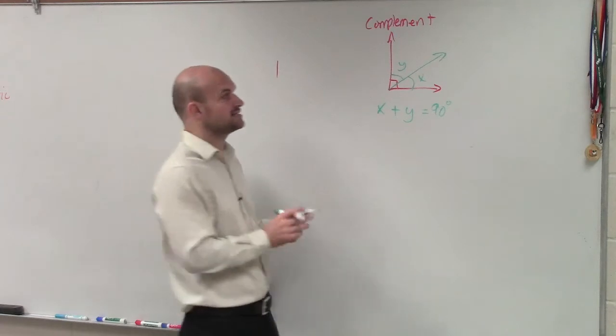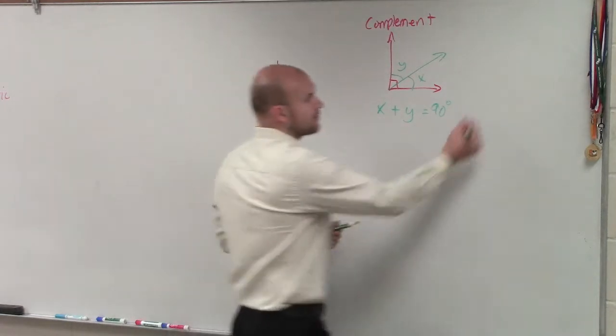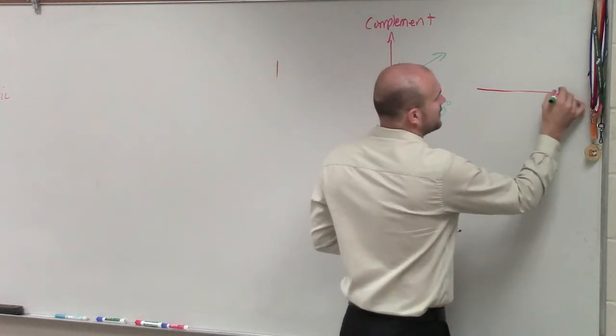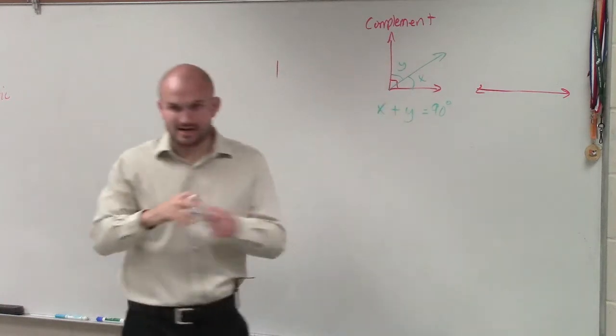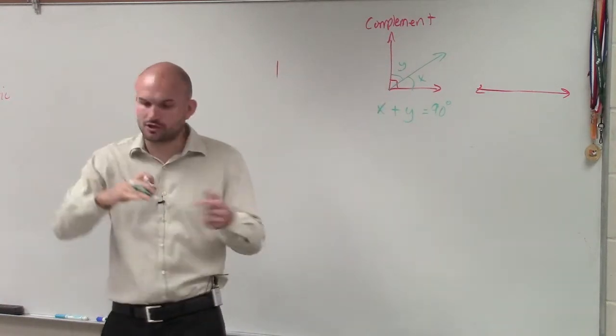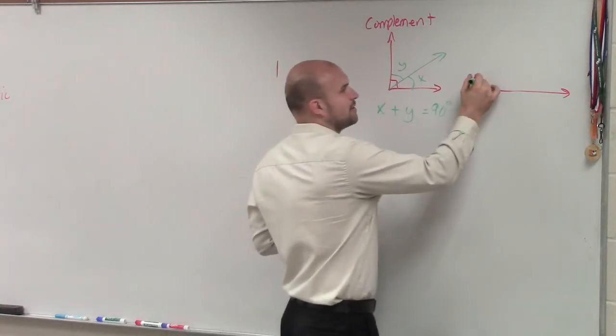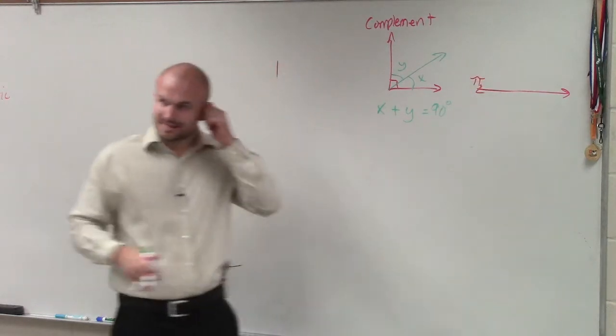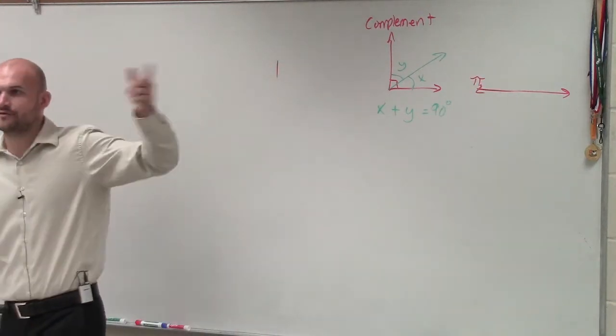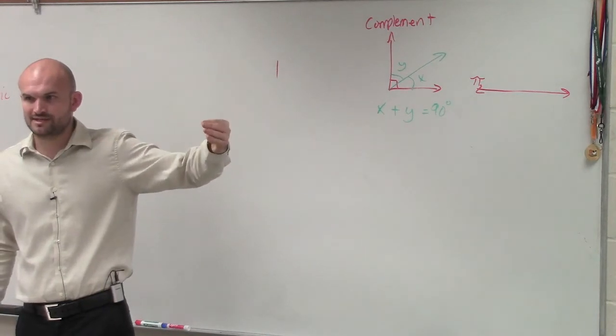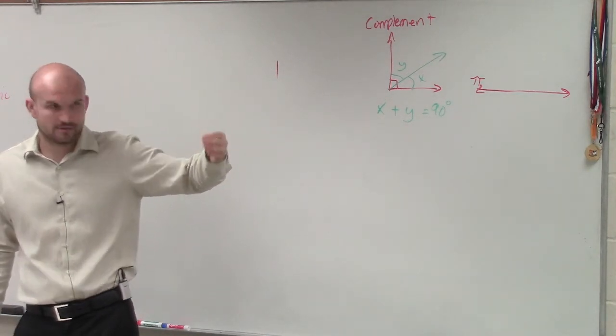But now what we've also done is introduced radian form. Remember, radians came into when we took a radius and wrapped it around a circle. We understand that there is 3.14159 radians halfway around a circle.